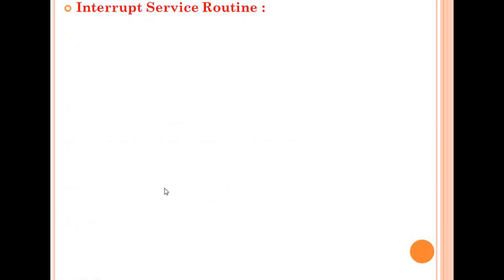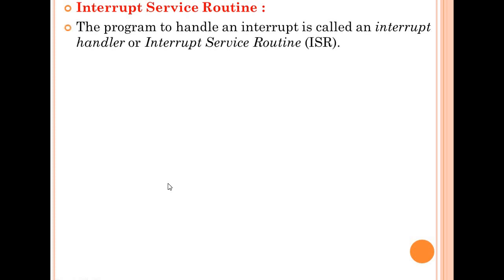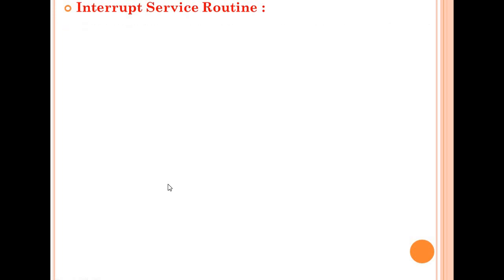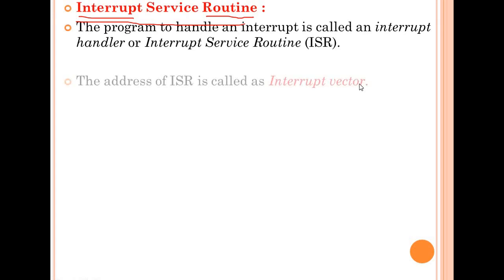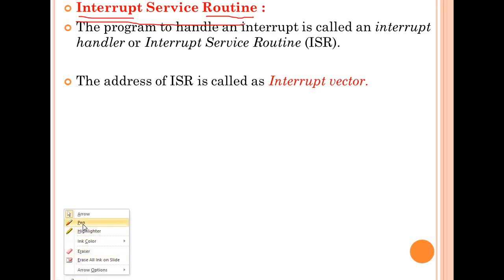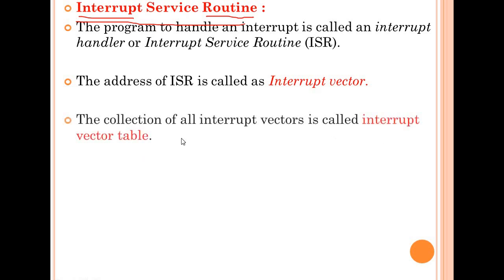Next: interrupt service routine. What is a routine? A routine is a sub-function or set of instructions that services your interrupt. The program which handles your interrupt is called an interrupt handler or interrupt service routine — ISR. The address of this ISR is called an interrupt vector, and the interrupt vector shows the direction to the ISR.